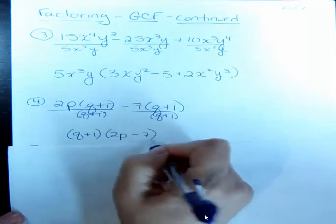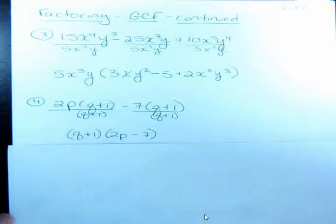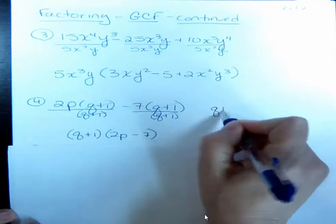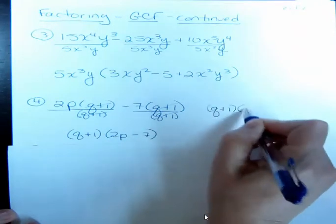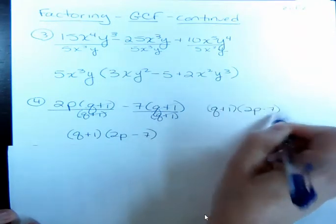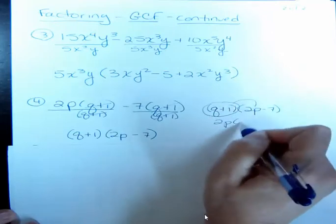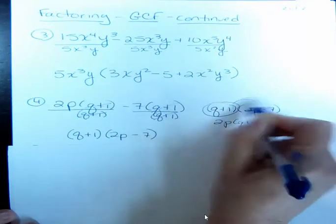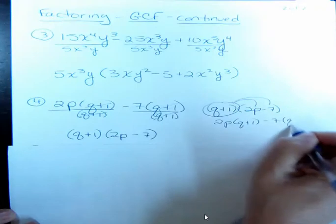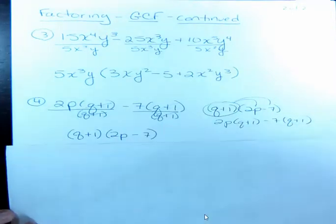So this one, these kind tend to trip people up a little more because they feel like they want to write that q plus 1 twice. But what this actually looks like, if you think about multiplying it out, is you have q plus 1 times 2p. And then you have q plus 1 times minus 7. So it's actually what we started with. By writing it out front, it applies to both of those.